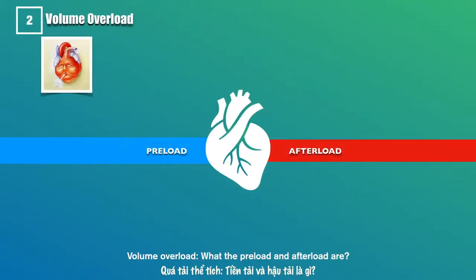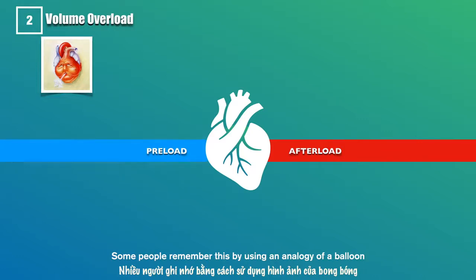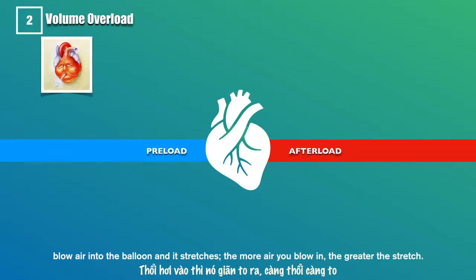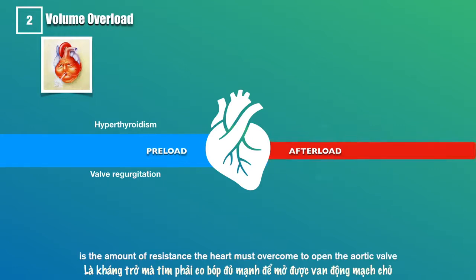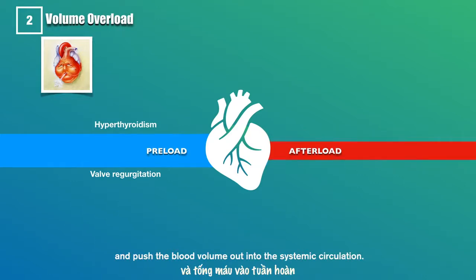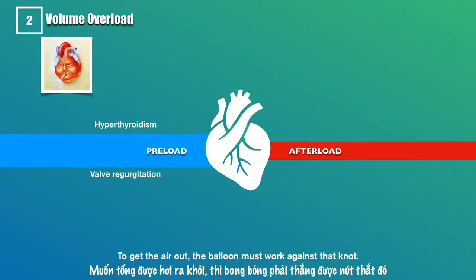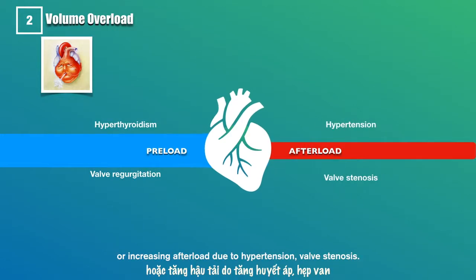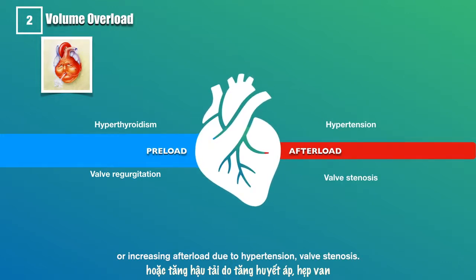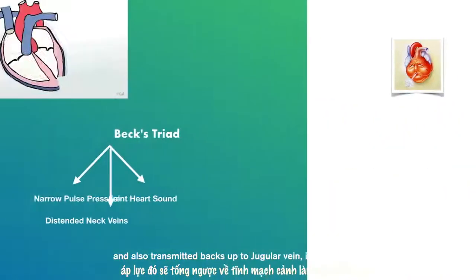Regarding volume overload — what are preload and afterload? Preload, also known as the left ventricular end-diastolic pressure, can be remembered using a balloon analogy: blow air into the balloon and it stretches; the more air you blow in, the greater the stretch. Afterload, also known as systemic vascular resistance, is the resistance the heart must overcome to open the aortic valve and push blood into systemic circulation — represented by the knot at the end of the balloon. Increasing preload due to hyperthyroidism or valve regurgitation, or increasing afterload due to hypertension or valve stenosis, increases ventricular volume and pressure, which is transmitted back to the jugular vein and raises JVP.